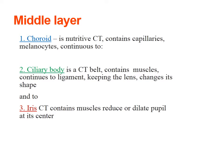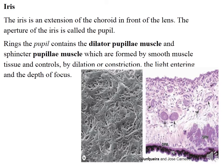The middle layer consists of three components: choroid, ciliary body, and iris. The iris is an extension of the choroid in front of the lens. The aperture of the iris is called the pupil. The iris contains the dilator pupillae muscle and sphincter pupillae muscle, which are formed by smooth muscle tissue. The iris consists of three layers: anterior epithelium (containing pigment cells and fibroblasts), an intermediate layer (containing loose connective tissue rich in blood vessels and cells), and posterior epithelium (consisting of two layers of columnar cells).